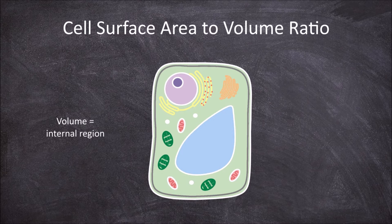The volume of the cell consists of the internal regions of the cell. Inside the cell there are a multitude of metabolic reactions occurring which require the acquisition of gases and chemicals, as well as producing waste.